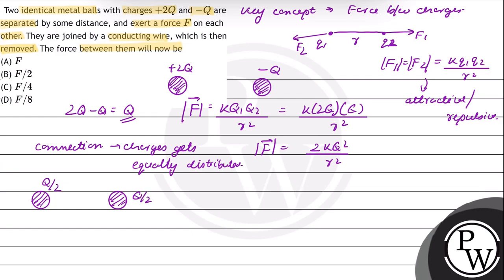So this will be equal to Q by 2 and Q by 2. So the F dash will be equal to K Q1 dash and Q2 dash upon R square. Q1 ki value Q by 2 and Q2 dash the value of Q by 2. So the new force will be equal to K Q square by 4 upon R square. So F dash will be equal to K Q square by 4 R square.